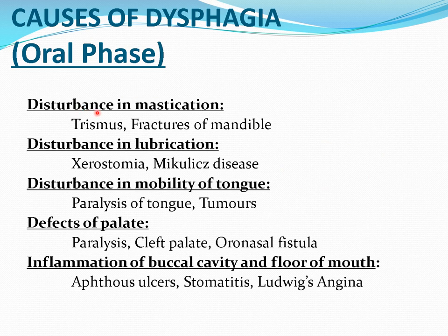Disturbances in mastication include trismus and fracture of mandible. Disturbances in lubrication include problems of the salivary gland, xerostomia, and mucosal disease. Mobility of tongue is affected in paralysis and tumors of tongue. Defects of the palate — palate paralysis and cleft palate — and oroantral fistula are also included. Inflammatory conditions of the buccal cavity and floor of the mouth, after stomatitis, are also causes.